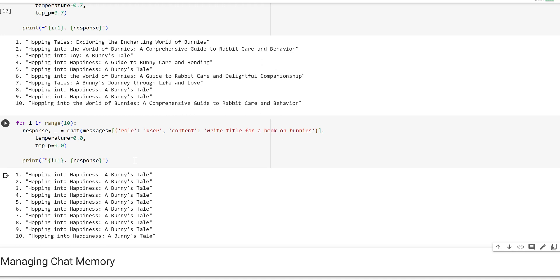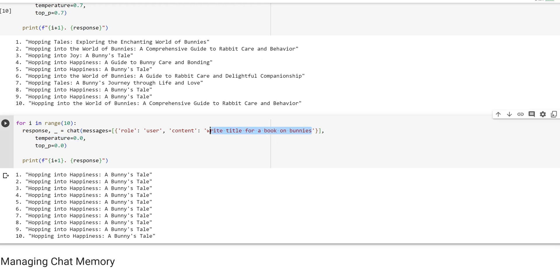I encourage you, like always, to play with this, to give it different tasks to do, and choose different temperature and top P values. Then check the variation in output. It's definitely something that's useful in a chat situation where you may want your chatbot to be a little bit more creative, or a little bit less creative if you're playing it safer.